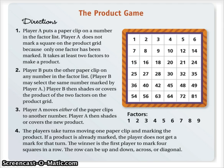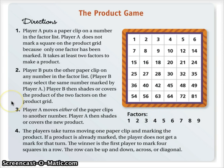Let's go ahead and take a look at the directions for the product game shown on the screen. These are going to look somewhat complex, but we're going to play through a quick game using an online version. The first direction says that Player A puts a paperclip on a number in the factor list. Player A does not mark a square on the product grid because only one factor has been marked — it takes at least two factors to make a product.